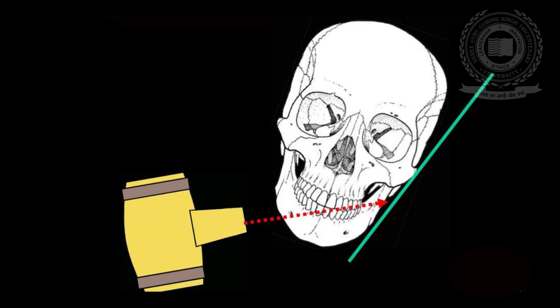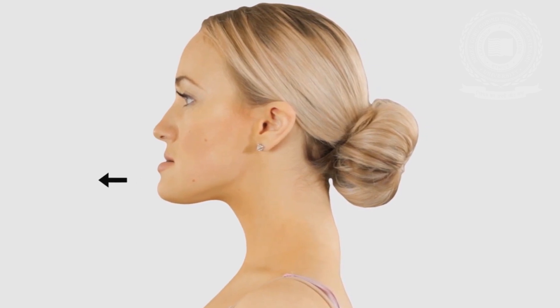Coming to the technique for mandibular ramus projection: the patient's head shall be tilted towards the side of interest such that the condyle of the area of interest and the contralateral angle of the mandible form a horizontal line. The patient is also asked to protrude the mandible. The central x-ray beam will be directed towards the imaged ramus about 2 cm below the inferior border of the mandible of the opposite side at the region of the first molar, with a negative vertical angulation of 10 to 15 degrees. The resultant radiograph will show a clear image of the third molar, the retromolar area, the angle of mandible, the ramus, and the condylar head.